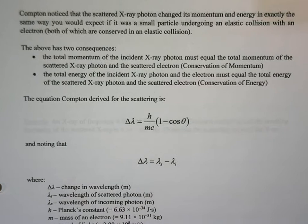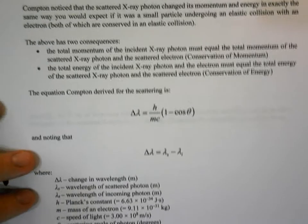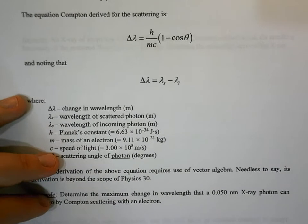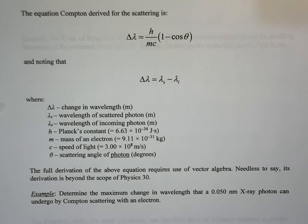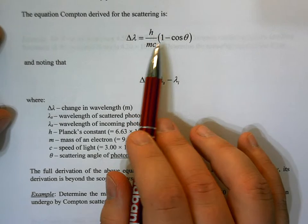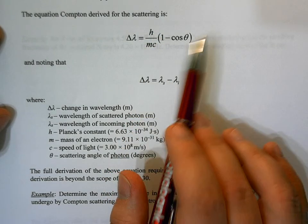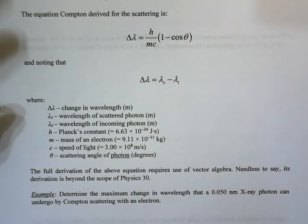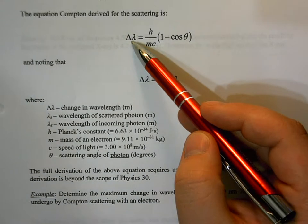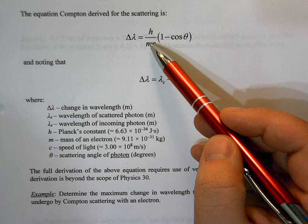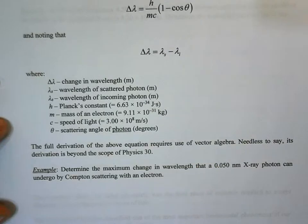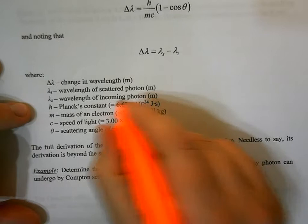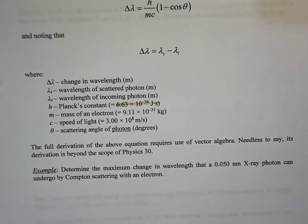The Compton Effect was the last real big piece of evidence to support that light can also behave like a particle. It can be analyzed using conservation of energy, conservation of momentum, and a lot of fancy mathematics — though we are not responsible for doing that fancy mathematics in high school. That change in wavelength observed in Compton scattering is going to be Planck's constant divided by the mass of the electron times the speed of light, all multiplied by (1 minus cosine theta). Planck's constant here must be in joule seconds — not electron volt seconds.